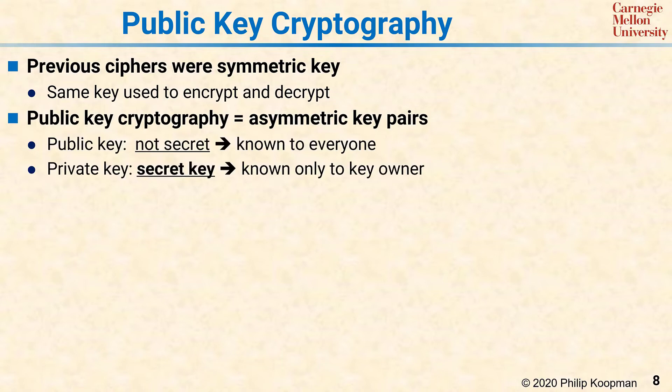In particular, there's a public key which is not secret. Part of the key you can tell to everyone, including adversaries — you can post it on the web, attach it to your email, anything you want. But there's also a private key, and the private key is a secret key known only to the key owner and not even to the message recipient.